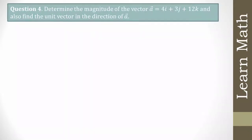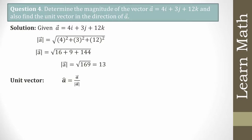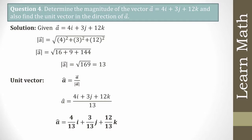Next question: determine the magnitude of vector a = 4i + 3j + 12k and also find the unit vector in the direction of a. |a| = √(4² + 3² + 12²) = √169 = 13. By definition, unit vector â = a / |a| = (4i + 3j + 12k) / 13 = (4/13)i + (3/13)j + (12/13)k.